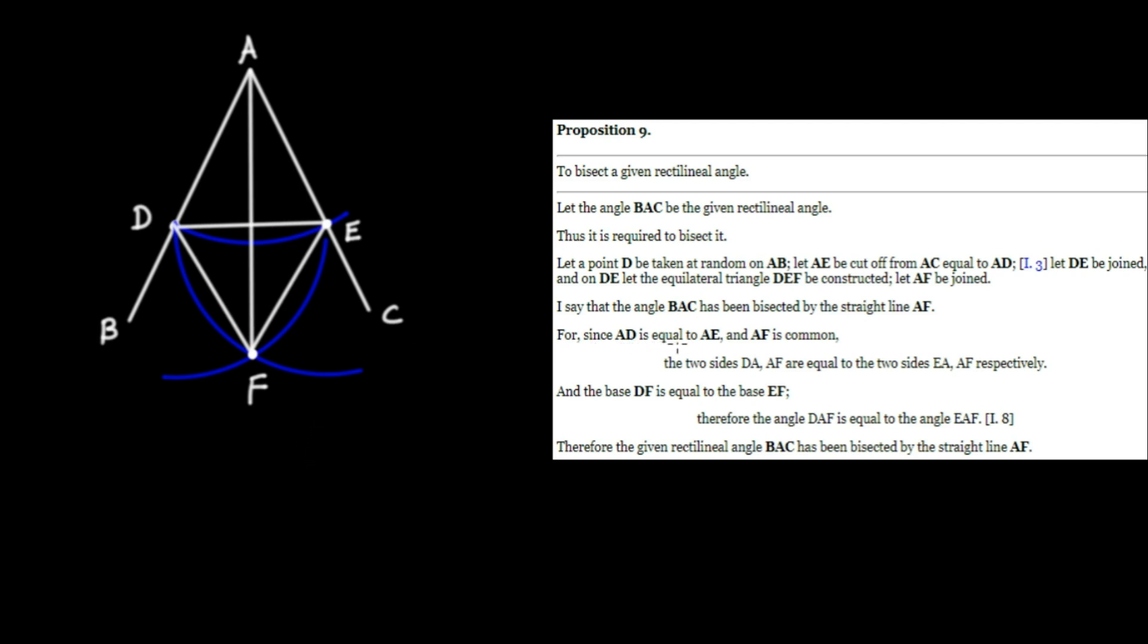Since AD is equal to AE. So let's take note of that. AD is equal to AE. We use proposition three to do that. So those two guys are equal. AF is common. So I'll mark that with a double dash. AF is common.